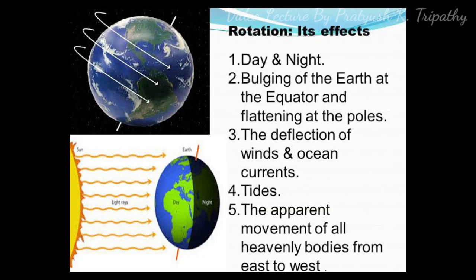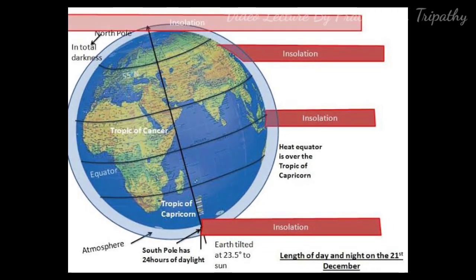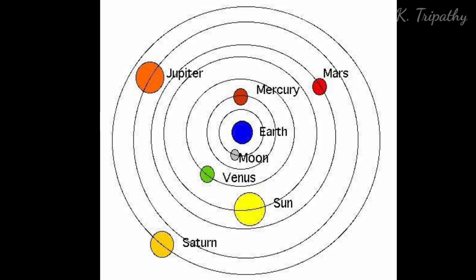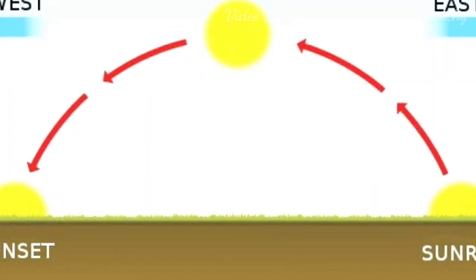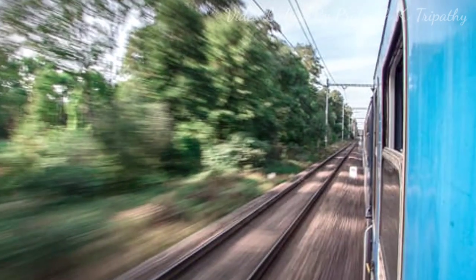Let us now discuss the effects of rotation. First point is rotation causes day and night. Secondly, the variation in temperature is also due to this rotation. Third, is the apparent movement of the celestial bodies is the evidence of Earth's rotation. For example, you can take the sun. The sun actually is stationary but due to the rotation of the Earth, it appears that the sun is moving.